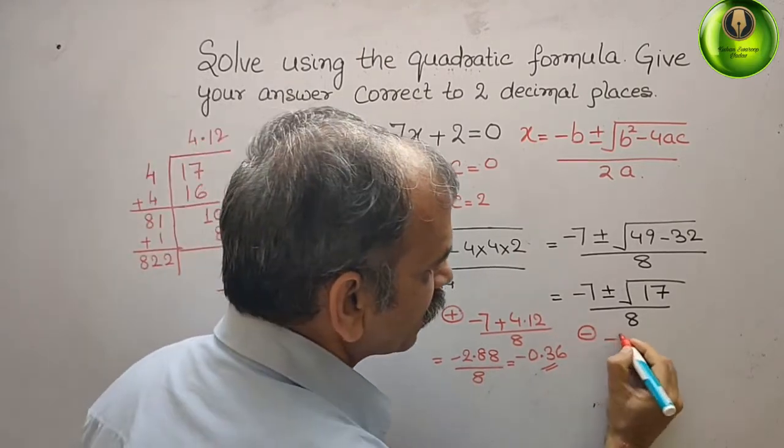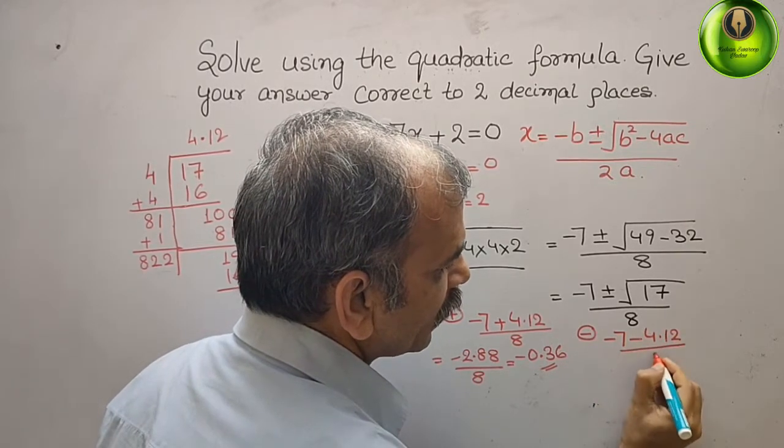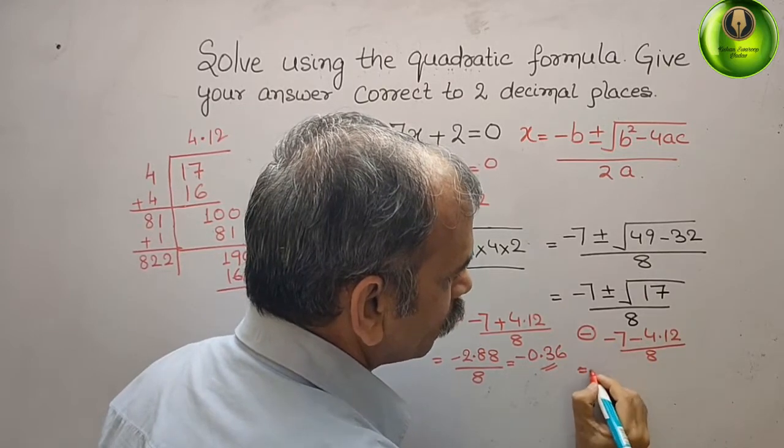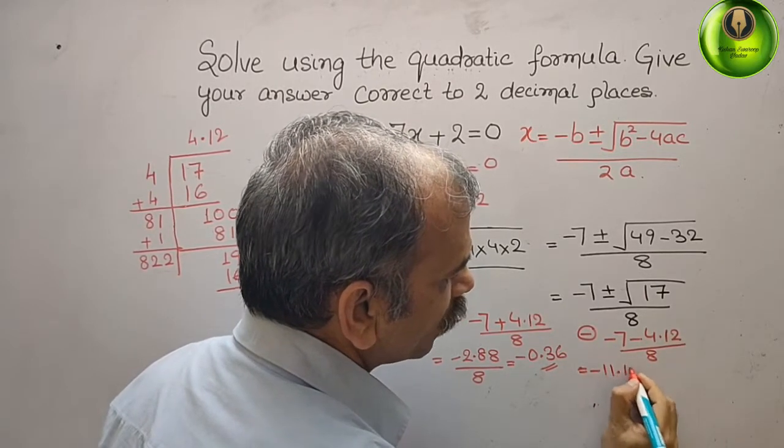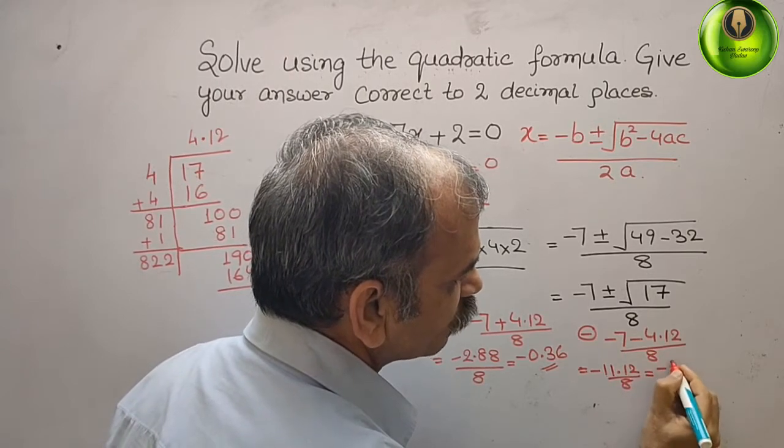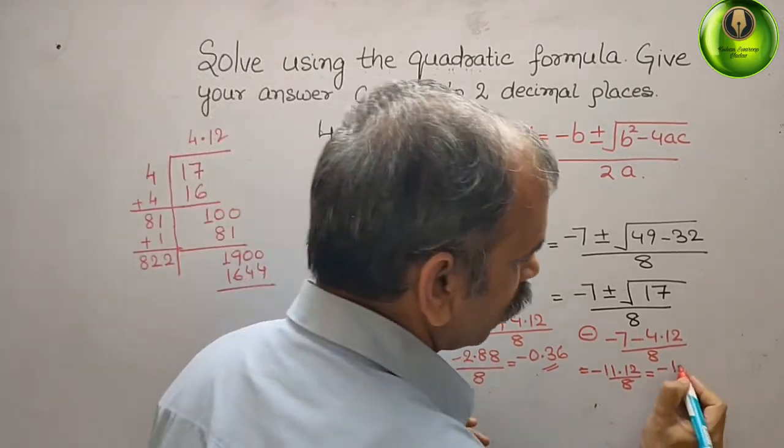Now we will take a minus sign here, so that gives you (-7 - 4.12) / 8, that gives you -11.12 / 8. This gives you -1, 1 times that means you will get 3, then dot.